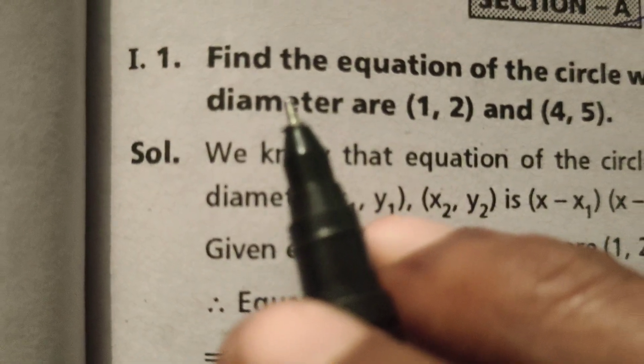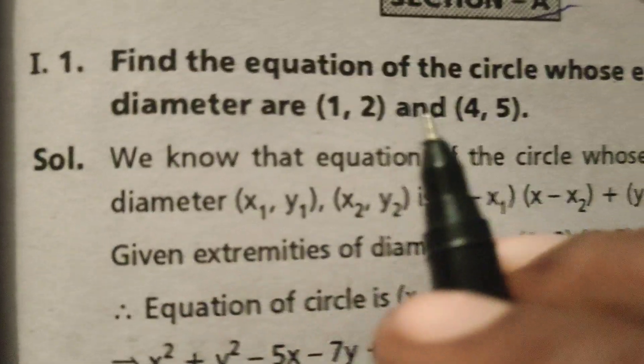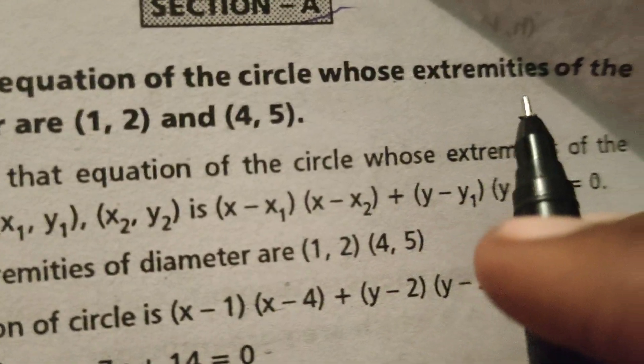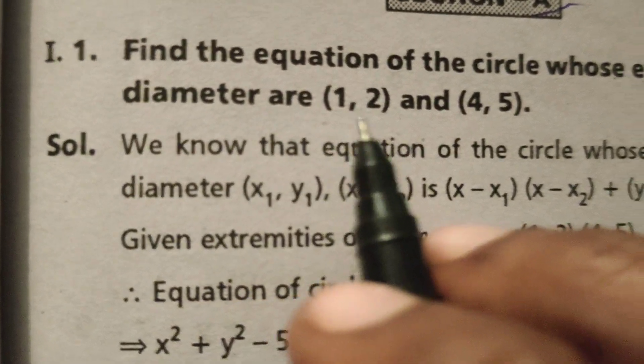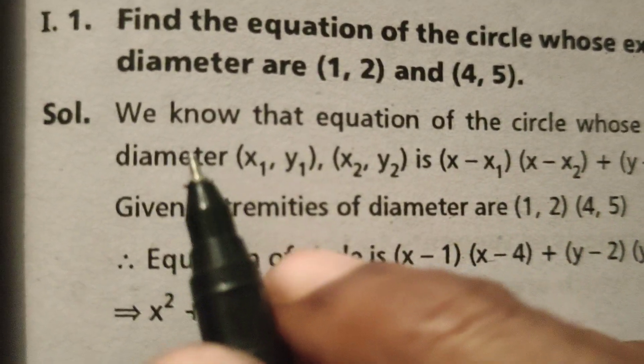Hi everyone, this is Dr. Aethi. Now today we are going to find out in this problem, find the equation of the circle whose extremities of the diameter are (1,2) and (4,5).